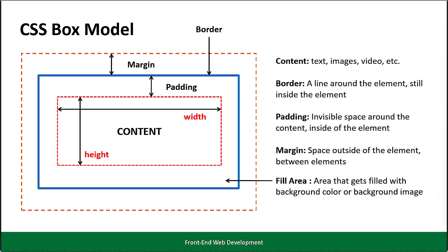At the heart of the box model lies the content. This is where the text, images, videos, and other media reside — it is the core element defining the primary information you wish to display. The size of the content is controlled by the width and height properties in CSS. Properly managing content size is essential for ensuring that your elements appear as intended across different devices and screen sizes.